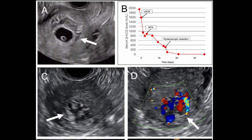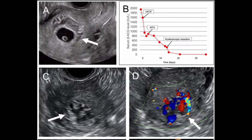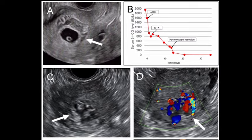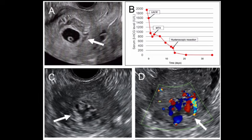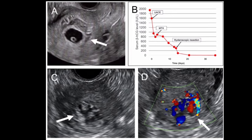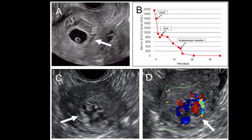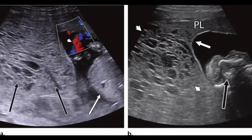Notably, differential diagnoses are very essential. These include fetal demise with placental hydropic change, where beta-HCG levels are invariably low. Secondly, twin pregnancy with one normal twin and one complete hydatidiform mole, where the normal twin usually has its own normal placenta.